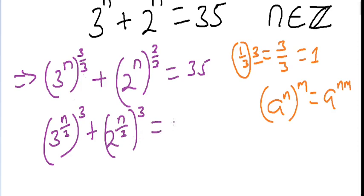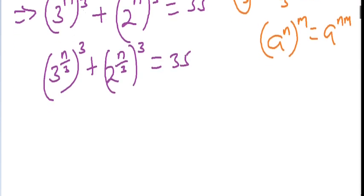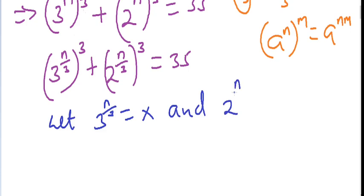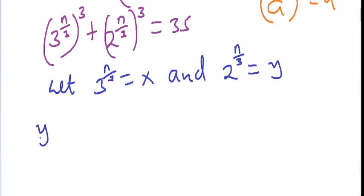Now as you can see, we can express the elements inside the brackets in terms of other variables. So let 3 raised to n over 3 equal x, and 2 raised to n over 3 equal y. That gives us x cubed plus y cubed equals 35.